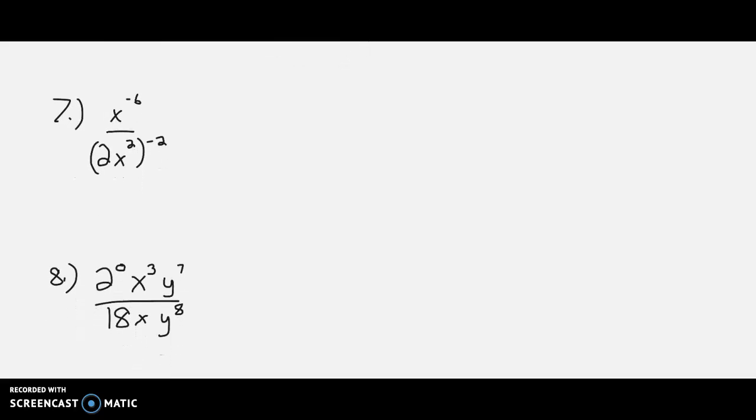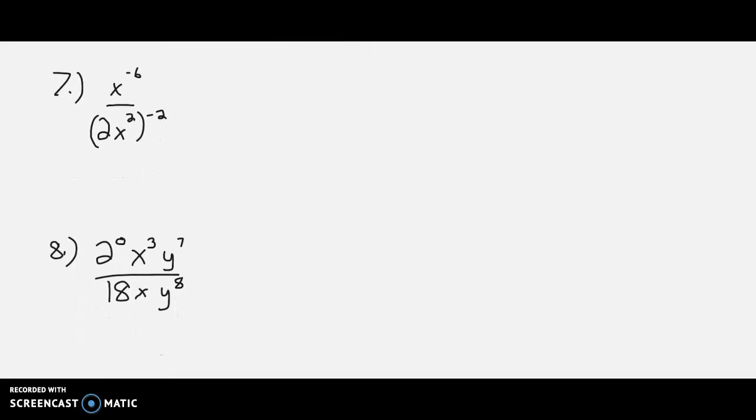All right, we've got a couple more here, 7 and 8. For number 7, let's take care of, well, here's what we can do. We can flip around the numerator and denominator. This will become 2x squared to the positive 2 and x to the 6th positive for the bottom.